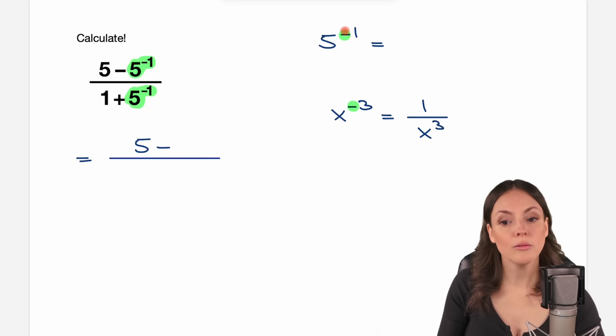In our case, this means we have a negative exponent, we know we can write it as a fraction, it's always 1 over, and then you take your expression 5 to the power of, you don't write the minus here anymore, just the 1. So 5 to the power of negative 1 is the same as writing 1 over 5.